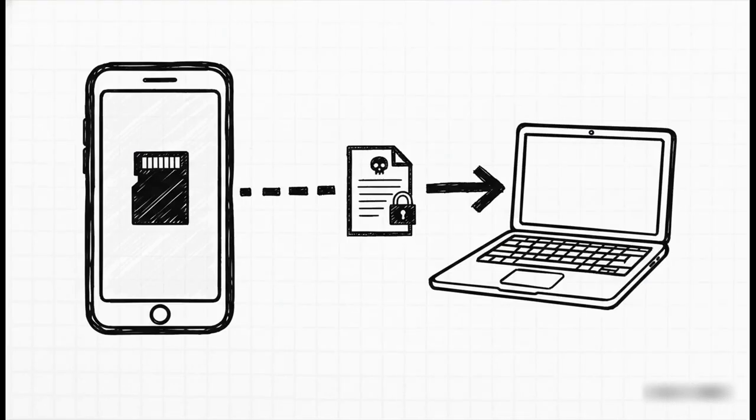Here's what that looks like in practice — this one single command is the reality of the threat: 'adb pull /sdcard/example.txt .'. That's it. You're copying a sensitive file right off the device's storage onto the attacker's machine. You don't need some complex zero-day exploit chain. All you need is that one exposed port and a single native command, giving you pretty much unrestricted ability to pull any data the shell user has access to.